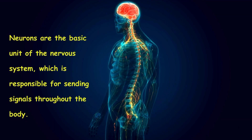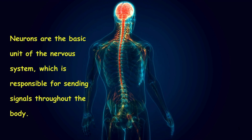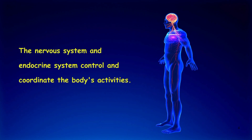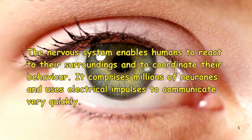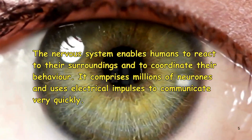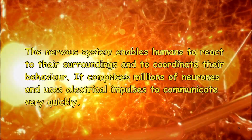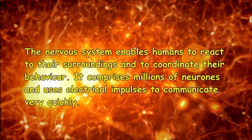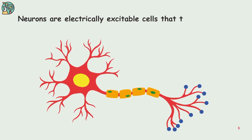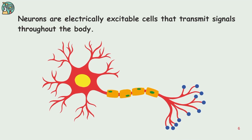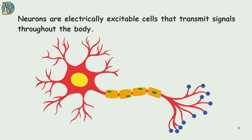Neurons are the basic unit of the nervous system, which is responsible for sending signals throughout the body. The nervous system and the endocrine system control and coordinate the body's activity. The nervous system enables humans to react to their surroundings and to coordinate their behavior. It comprises millions of neurons and uses electrical impulses to communicate very quickly. Hence, we can say that neurons are the basic unit of the nervous system — electrically excitable cells that transmit signals throughout the body.